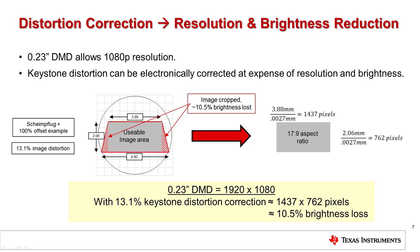While the 0.23 inch diagonal DMD can project up to 1080p resolution, the resolution of the cropped usable image area can be calculated. In this example, instead of 1080p resolution, a maximum of approximately 1437 by 762 pixels can be viewed once the keystone image is electronically corrected to a fully rectilinear image. Of course, the customer can determine if not all of the keystone distortion needs to be corrected and gain some of that resolution and brightness back.